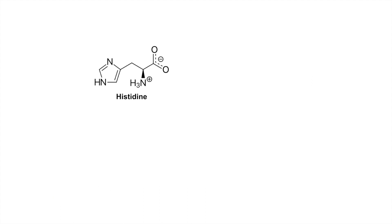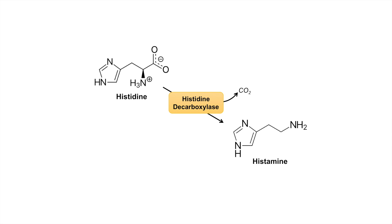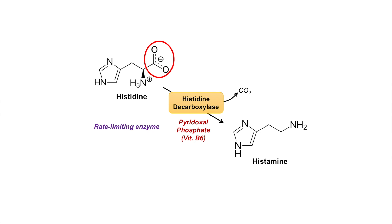To produce histamine from dietary histidine, it requires the enzyme histidine decarboxylase. This enzyme is within those cells we talked about earlier — mast cells, basophils, etc. Histidine decarboxylase acts on histidine and decarboxylates it, removing a carbon dioxide to give us histamine. This enzyme requires an important coenzyme known as pyridoxal phosphate, which is an active form of vitamin B6. Because it's a decarboxylation reaction, the structures of histamine and histidine are very similar. This is the rate-limiting step and is performed in one chemical reaction.